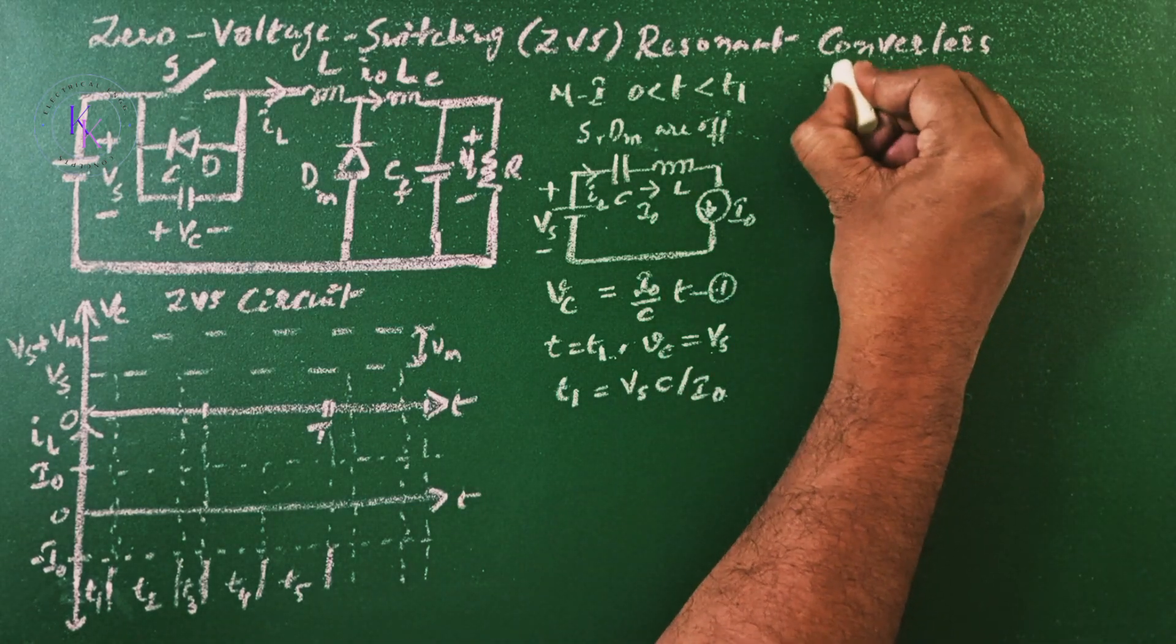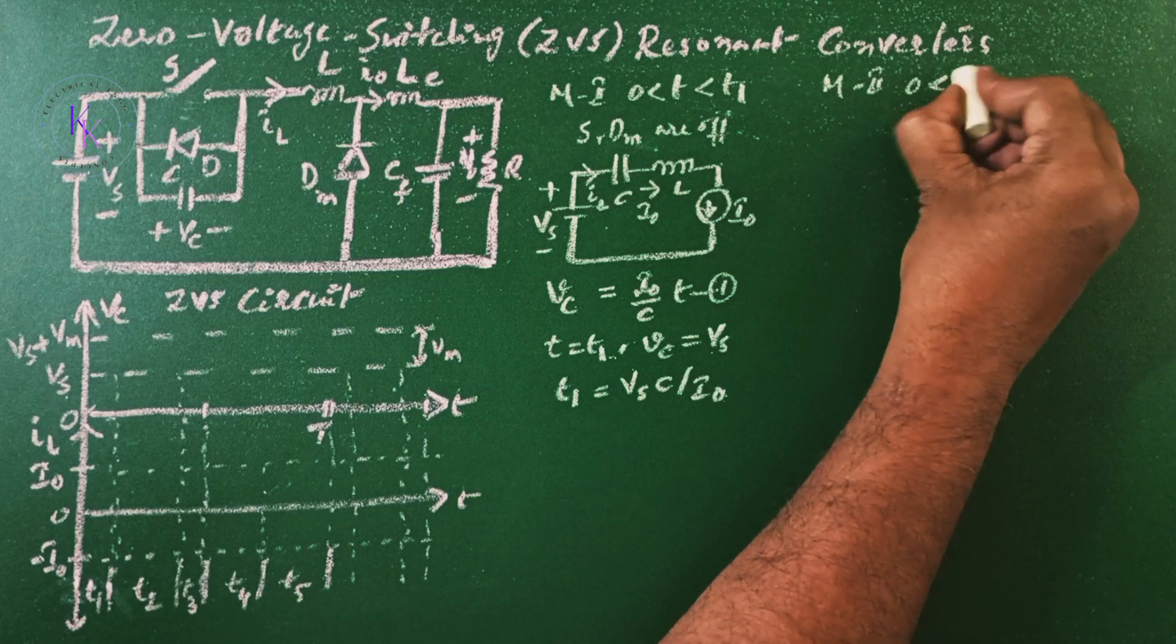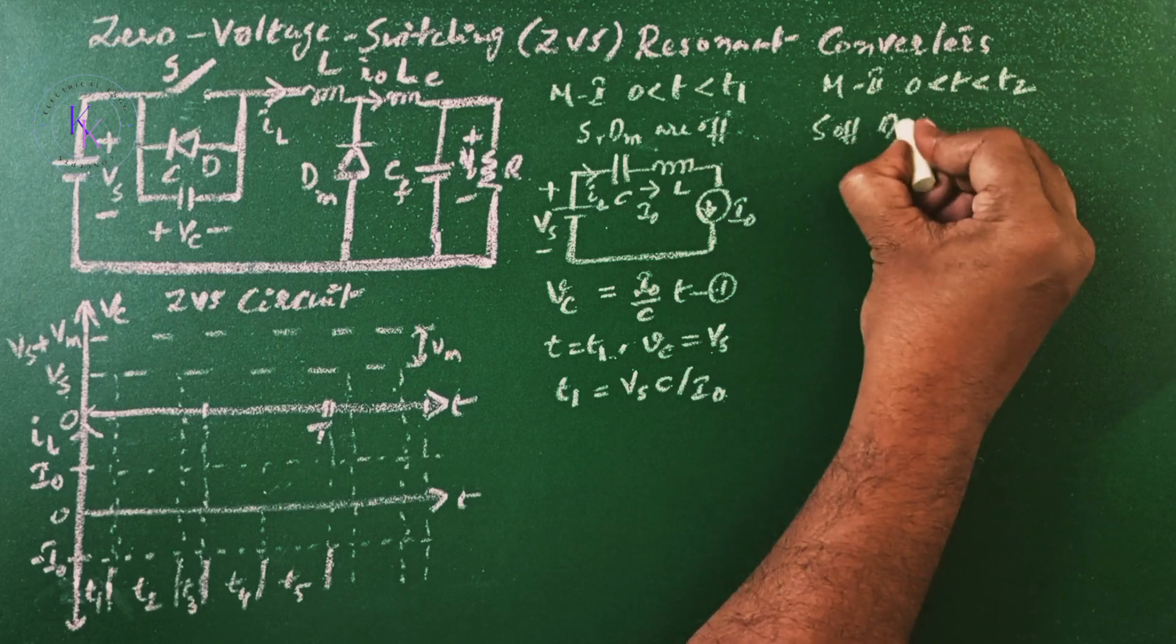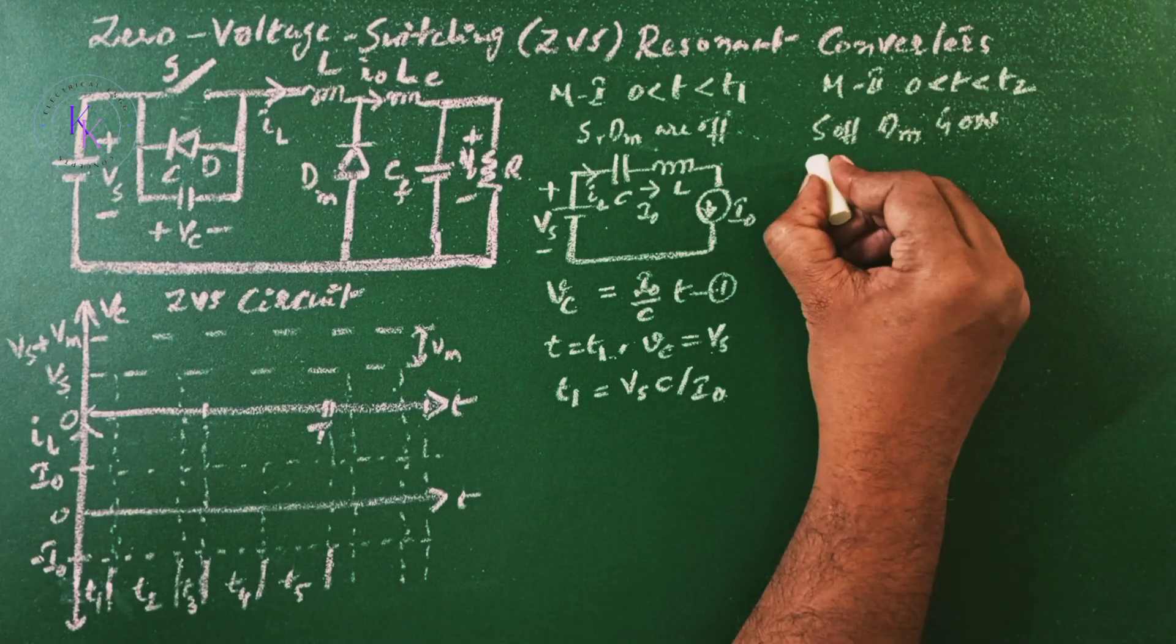Mode 2 is between zero T and T2, when S is off and DM is on. Then the equivalent circuit will be...